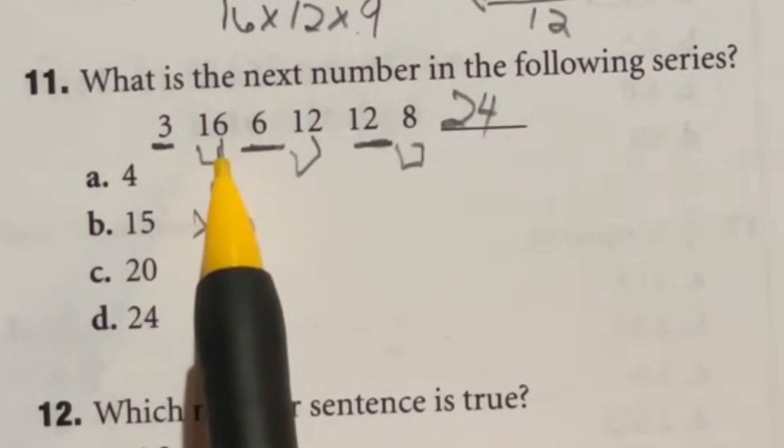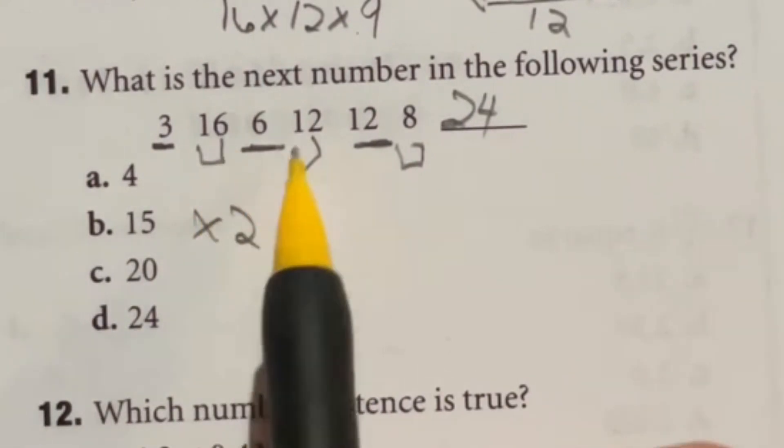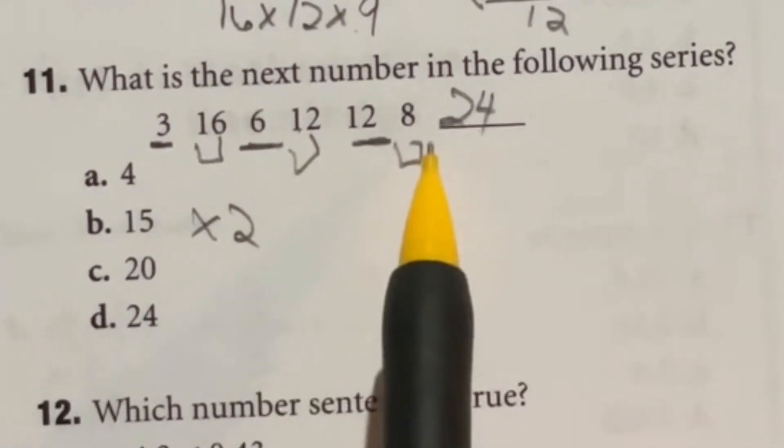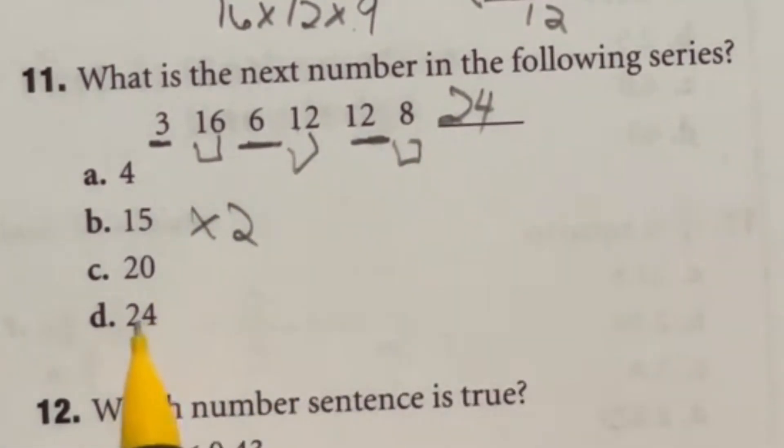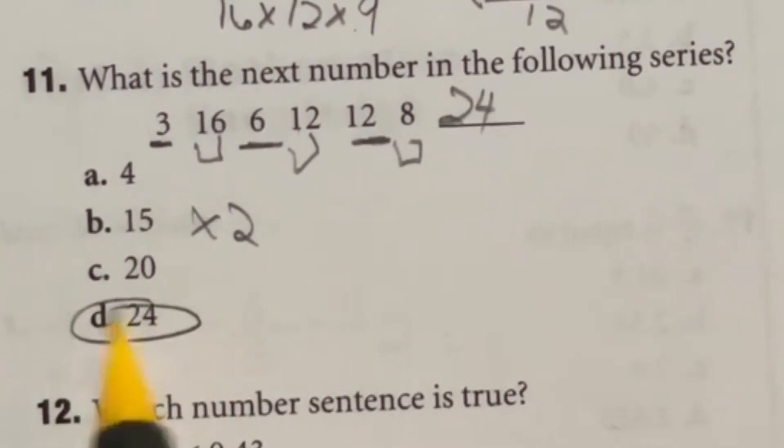For this guy right here, you're subtracting 4 each time. 16 minus 4 gives you 12, minus 4 gives you 8. Why they would make it two different series and then treat it like it's one, I have no idea. It could have you guessing forever, but the answer here is D.